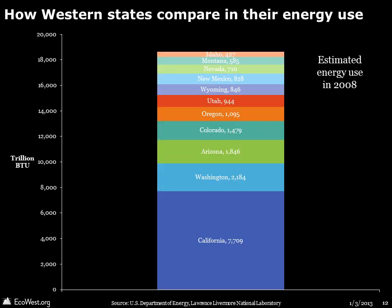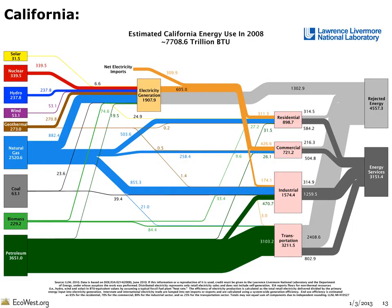Now let's shift to energy flows in the 11 western states. First off, it's worth noting that the region's energy economy is heavily influenced by California, which accounts for 41% of the total energy flows. Here's the picture for California. As you might expect, petroleum used in the transportation sector dominates the system in a state that is known for its car culture and also home to major transportation hubs.